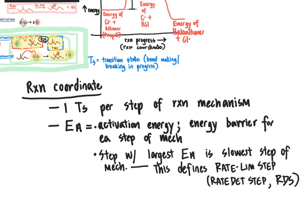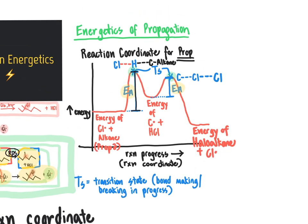As we continue looking at general terms to describe reaction energetics, we need to introduce additional terms that describe the overall reaction pathway by comparing the energy of the starting materials to the energy of the final product. If the energy of the starting materials is greater than the energy of the products, we describe the reaction as being exothermic, meaning it's going to release energy or heat during the course of the reaction.